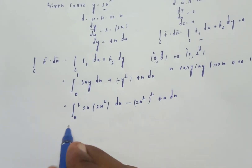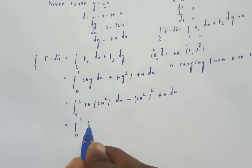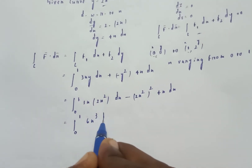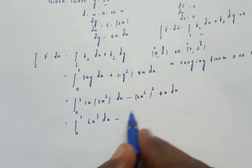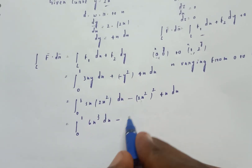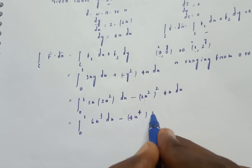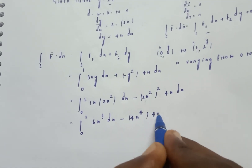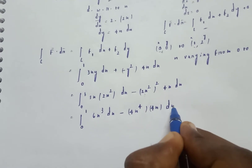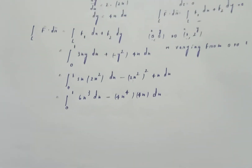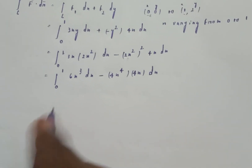This gives integral 0 to 1 of 6x cube dx minus 4x to the power 4 times 4x dx, which simplifies to integral 0 to 1 of 6x cube dx minus 16x to the power 5 dx.